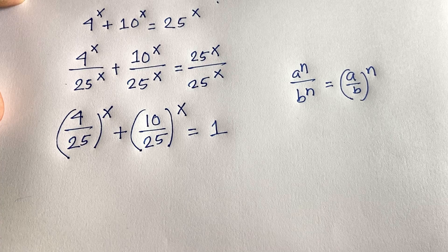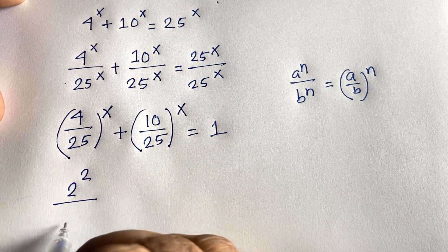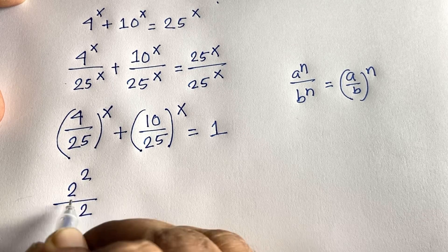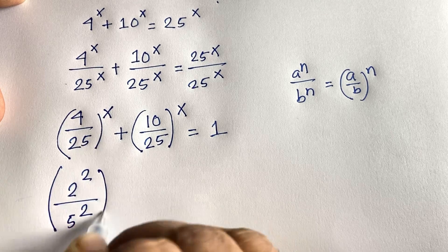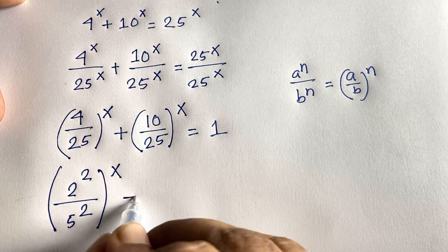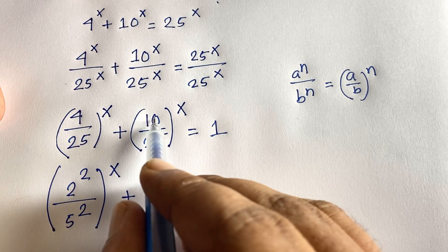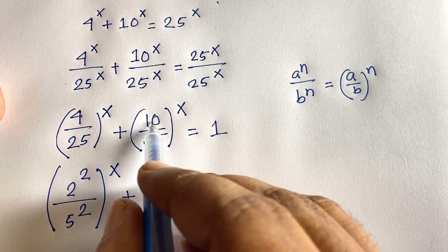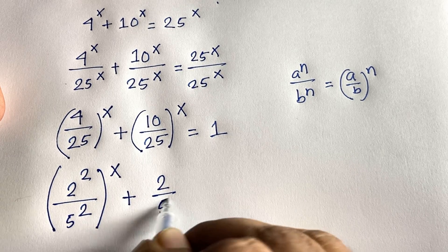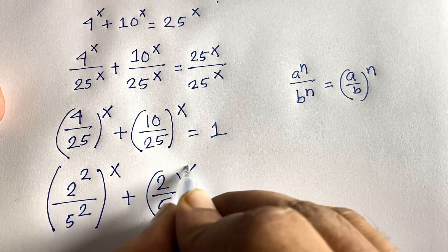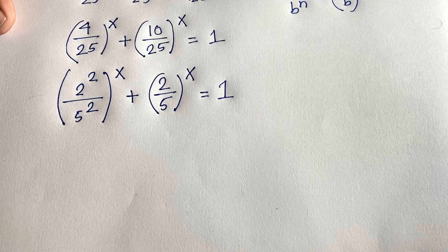Now, 4 = 2² and 25 = 5², so (4/25) = (2/5)². And 10/25 simplifies: divide both by 5 to get 2/5. So the equation becomes (2²/5²)^x + (2/5)^x = 1, which is (2/5)^(2x) + (2/5)^x = 1.